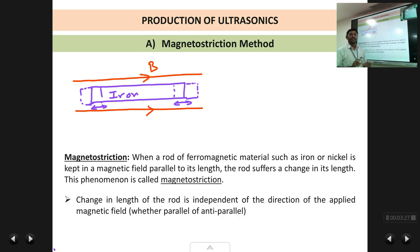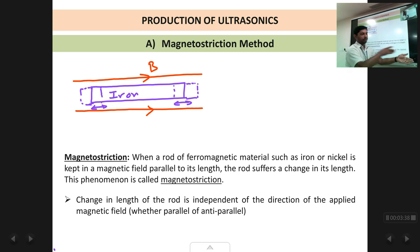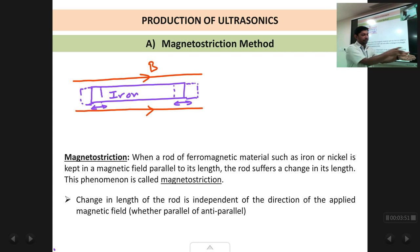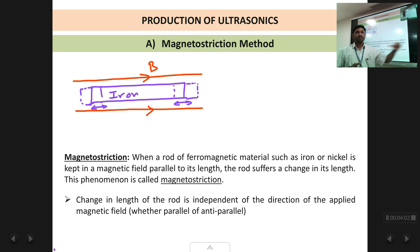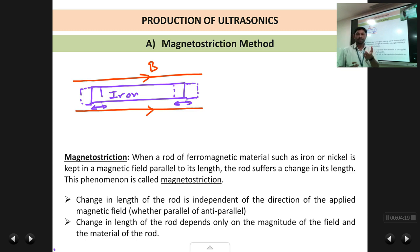A key feature of magnetostriction is that the change in length of the rod does not depend upon the direction of the applied magnetic field. Whether you apply the field parallel or anti-parallel to the length, the change in length remains the same. For example, if an iron rod increases in length when placed in a field in one direction, it will still increase even if you reverse the field. The change in length is independent of the direction of the applied field.